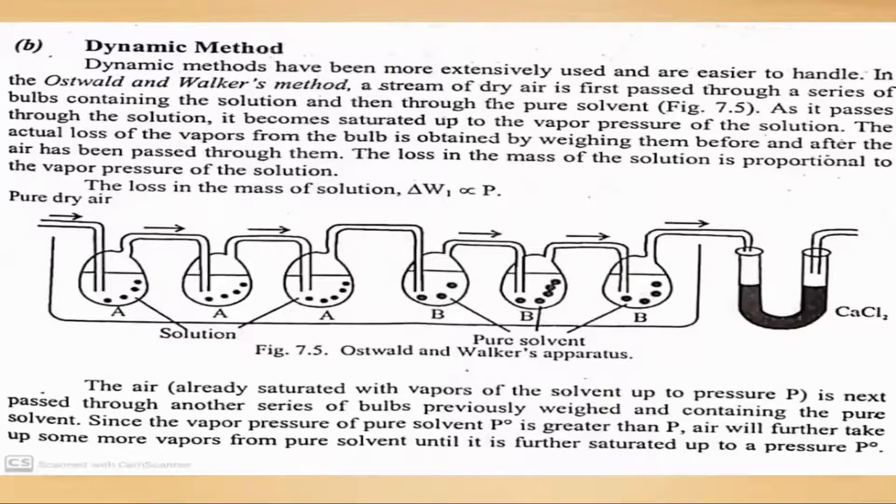The second is the dynamic method. The apparatus given before you is called Ostwald and Walker's apparatus. You can see the first three flasks, A A A, contain solution. Then in B B, these three flasks contain pure solution.